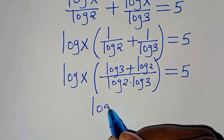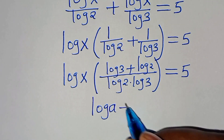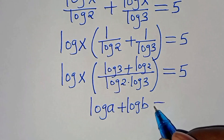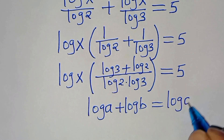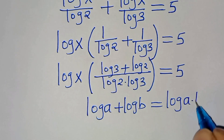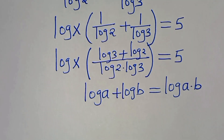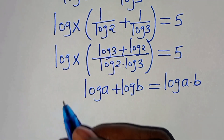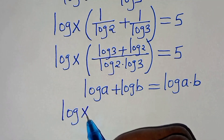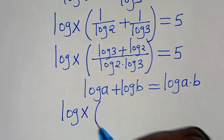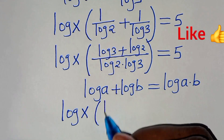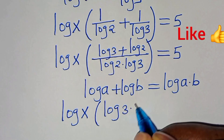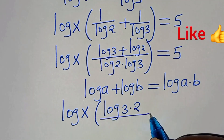Now log 3 plus log 2 is in the form of log a plus log b, which we can express using the product property. Applying this property, we have log x times log(3·2) divided by (log 2 · log 3), which equals log x times log 6 divided by (log 2 · log 3), all equal to 5.